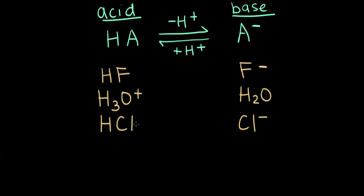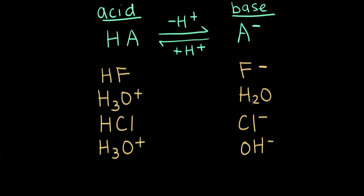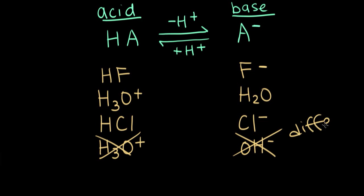Now let's go through two examples where it looks like we might have a conjugate acid-base pair, but we actually don't. The first is the relationship between H₃O⁺ and OH⁻. If H₃O⁺ is our acid and it loses one proton, its conjugate base is water. If water then loses another proton, we get OH⁻. So the difference between H₃O⁺ and OH⁻ is two protons instead of one — therefore hydronium and hydroxide are not a conjugate acid-base pair because they differ by two protons.